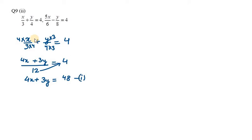Now solving the second equation: 5x/6 - y/8 = 4. Again we need to take the LCM of 6 and 8, which is 24. To make 6 as 24 we multiply by 4, so it will be 20x, and the second term we multiply by 3, so it will be minus 3y.